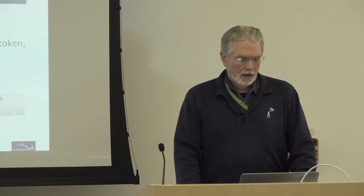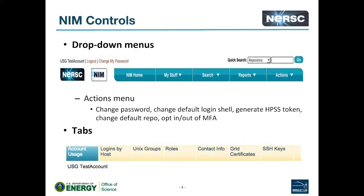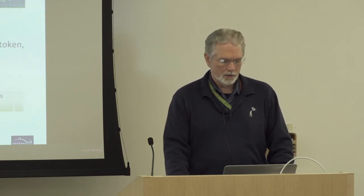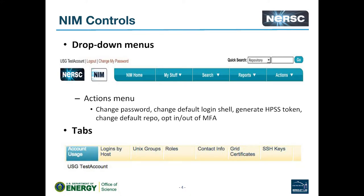In NIM, there are drop-down menus which give you access to different parts of NIM. The actions menu is where you'll find options to change your default login shell or default repo. You can also opt into or opt out of MFA, or multi-factor authentication, which is something new we started this year. Information is displayed under tabs: your account usage tab, logins by host showing the machines you have access to, groups that you belong to, grid certificates, and SSH keys.